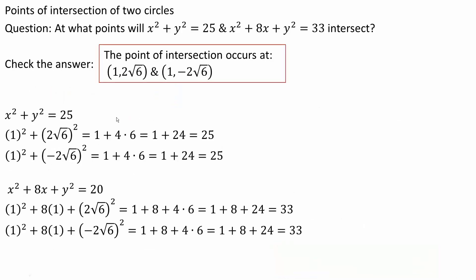We can always check by plugging these values back into both equations. For equation 1 with x = 1 and y = ±2√6: 1 + 4×6 = 1 + 24 = 25. ✓ For equation 2 with x = 1 and y = ±2√6: 1 + 8 + 4×6 = 1 + 8 + 24 = 33. ✓ It's a match, and that's it for this video.